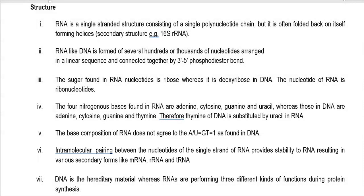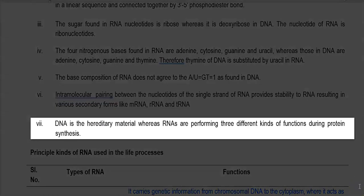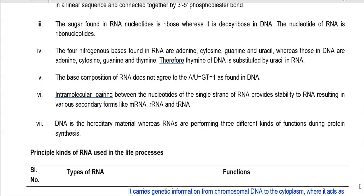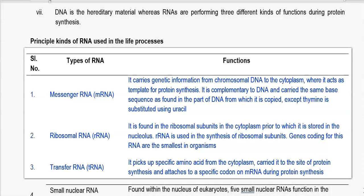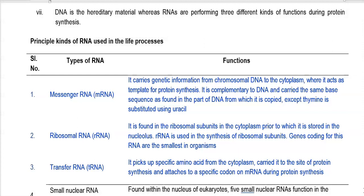Intramolecular pairing results in the formation of various secondary forms like rRNA and tRNA, whereas mRNA is actually a linear form. Intramolecular hydrogen bonding helps in stability, especially in rRNA and tRNA. DNA is a hereditary material, whereas RNAs perform three different kinds of functions during protein synthesis. Many other forms of RNA also exist in the cell, which we will see later.